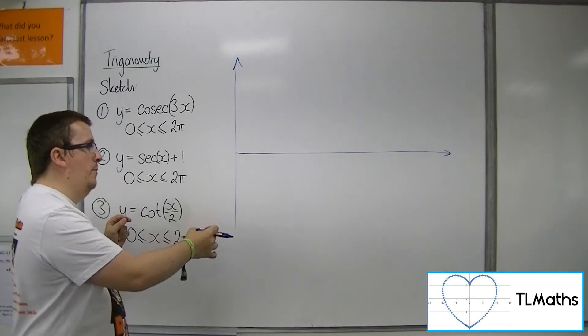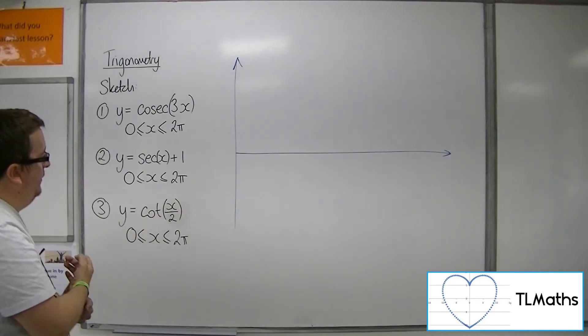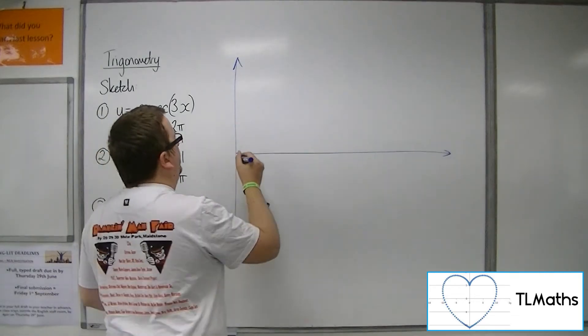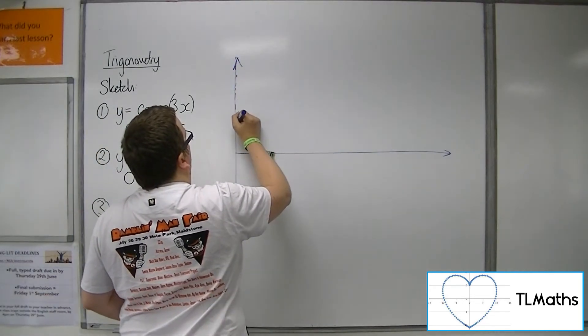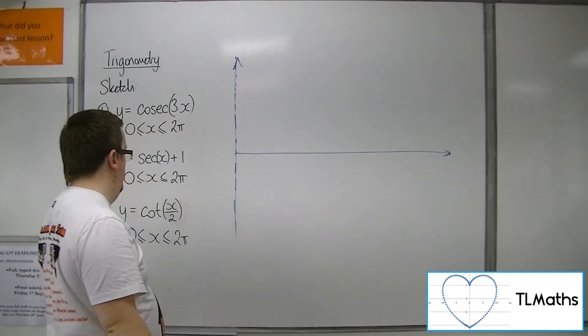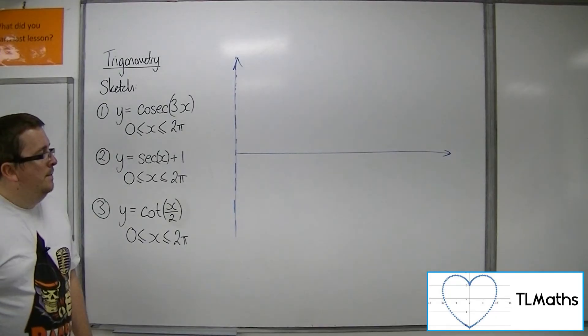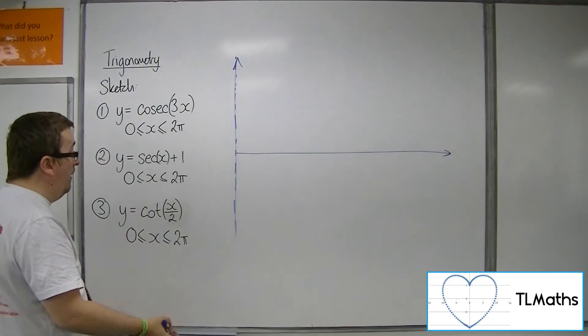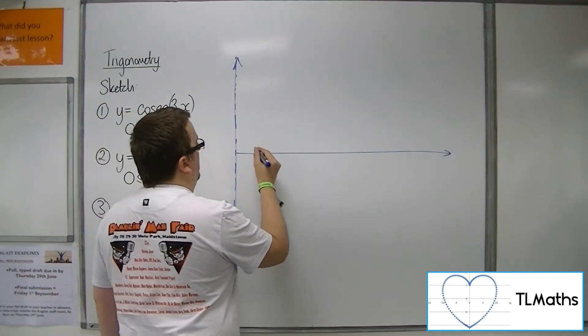Or 0, pi, 2 pi. So that's going to be stretched along. So we'll still have this asymptote for cot at 0. But the one that is at 180 degrees, or pi, will be now at 2 pi.